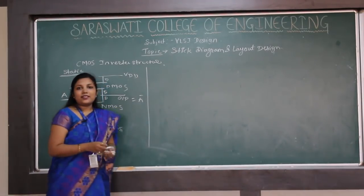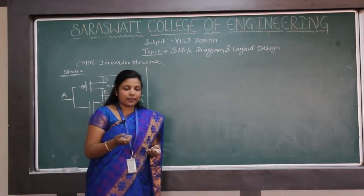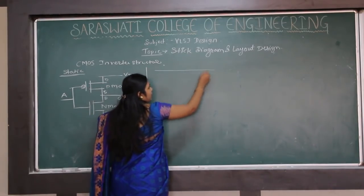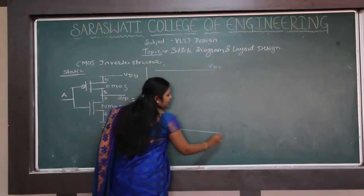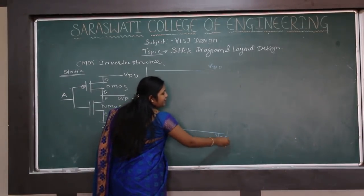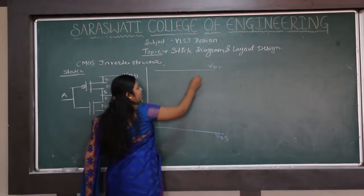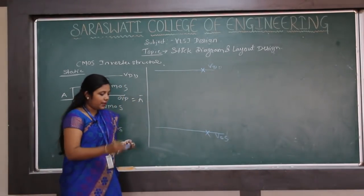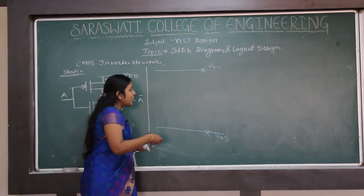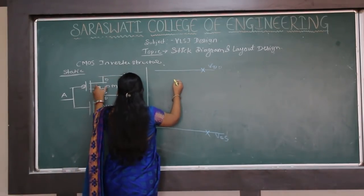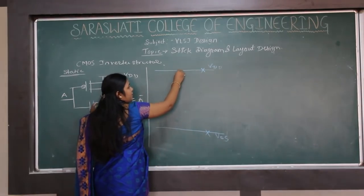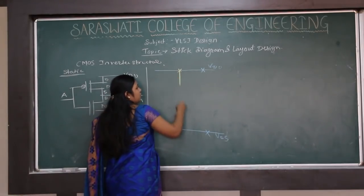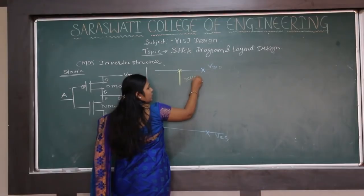Now, how to draw the stick diagram? There are certain conventions. For drawing the metal, VSS line and VDD line should be blue colored, and contacts are represented by a cross symbol. The P diffusion line — for PMOS creation — should be drawn in yellow or brown color.